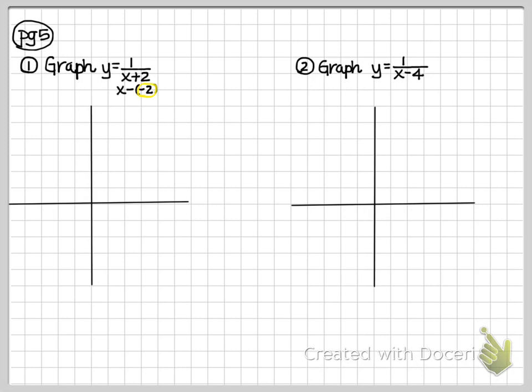All right, now I know where my vertical asymptote is because it's at that negative 2. So I'm going to go to my graph, and I'm going to put a vertical asymptote at x equals negative 2. So that's going to be my boundary that I cannot cross on that side.